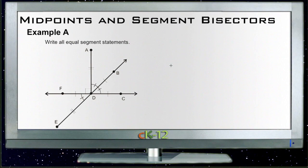Okay, let's take a look at the examples for midpoints and segment bisectors. Our first one, Example A, asks us to write out all equal segment statements. So we're going to take a look at the picture here and find out which angles are equal.